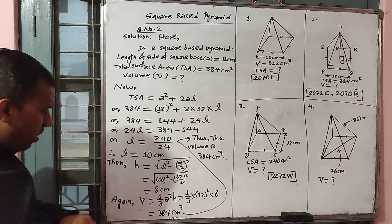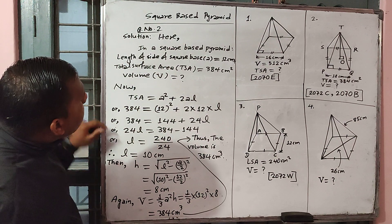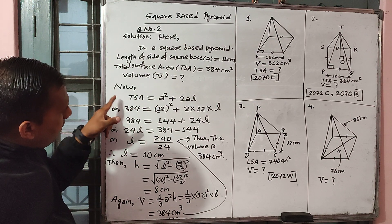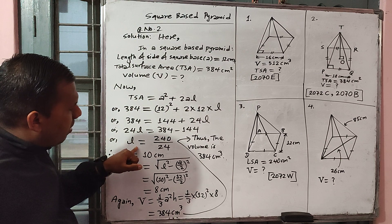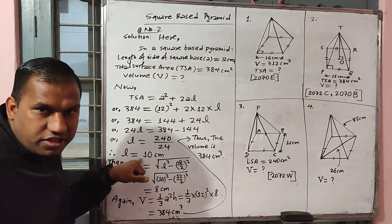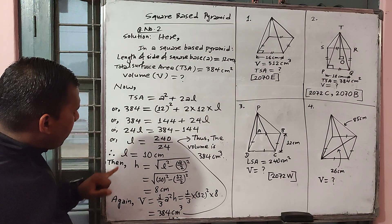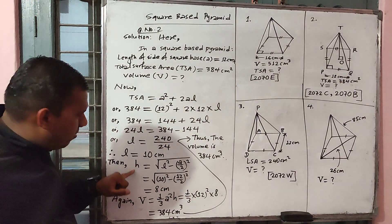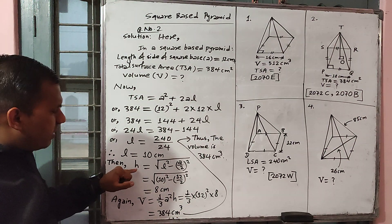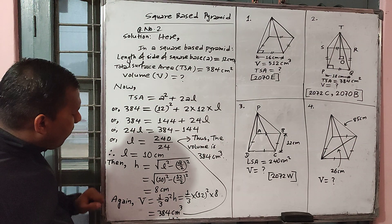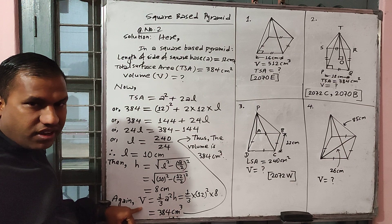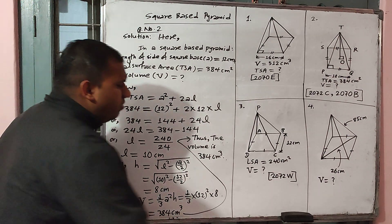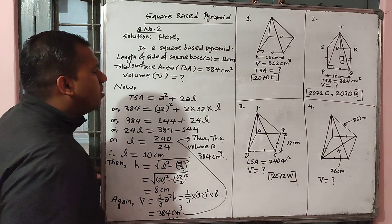Okay students, in question number 2, first of all by using TSA we can get the slant height of the square base pyramid. After getting slant height in the second step we can find vertical height, and finally in the third step we can find its volume. Now we go to question number 3.